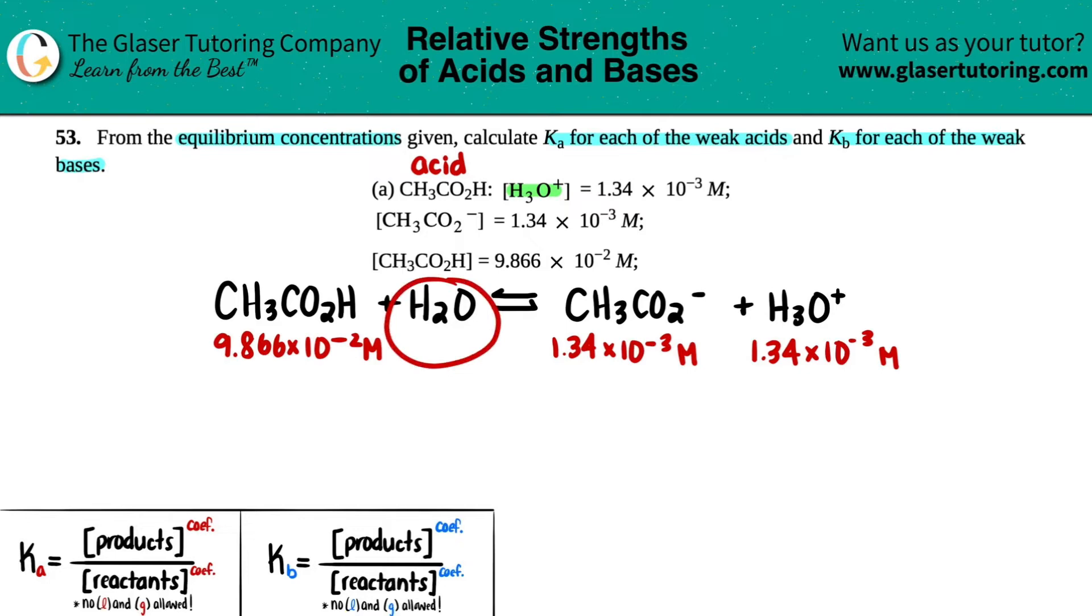Now, the question is, how much water is there? Well, remember, water is a liquid. So when we're talking about K values, equilibrium constants, water doesn't matter. So we don't include that in our equation. All the other ones are aqueous, therefore we take them into consideration.